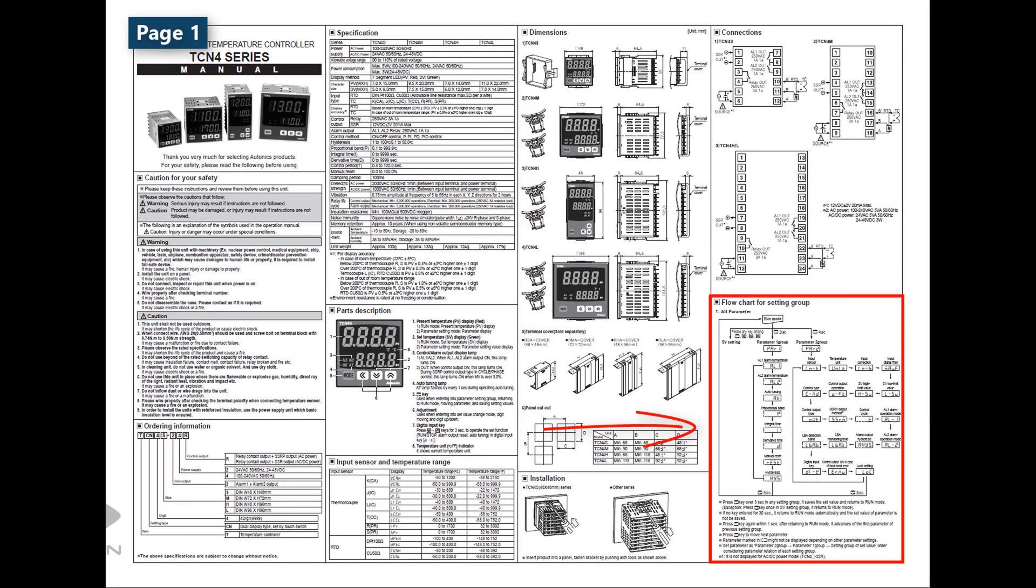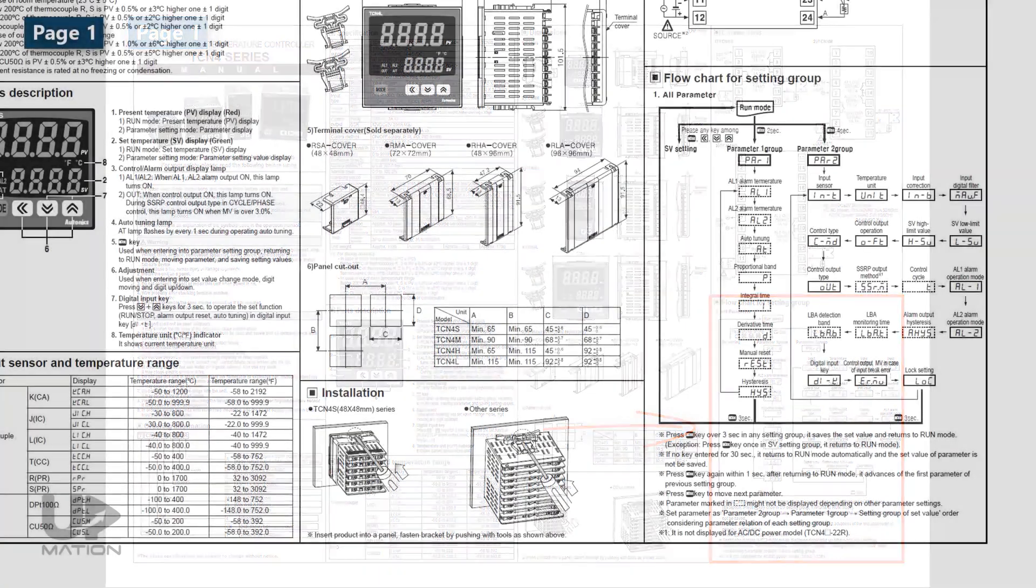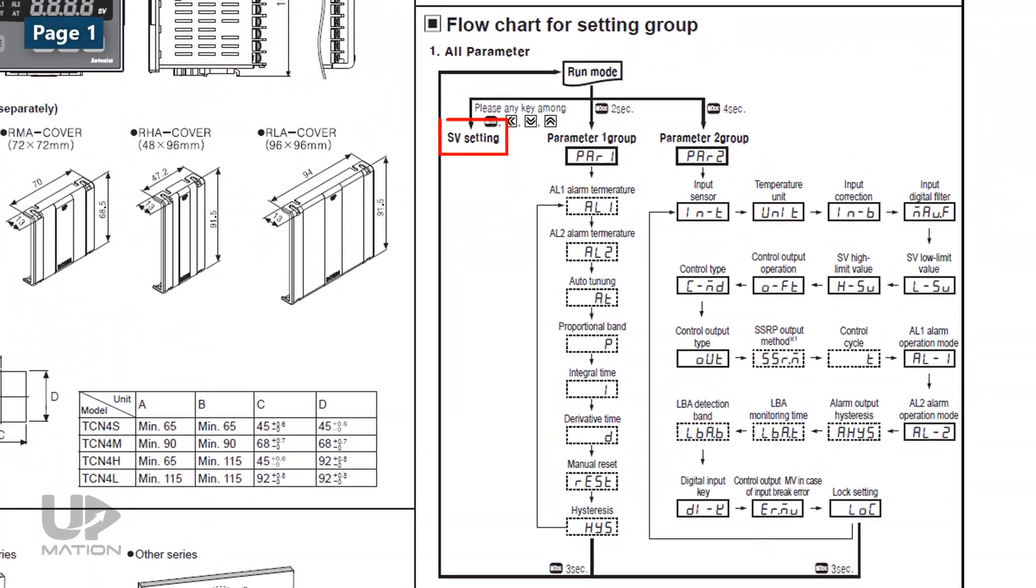Here, there is a flowchart that shows the classification of the parameters. The first one is for setting the SV or set value, which is the temperature you want to reach in your process.